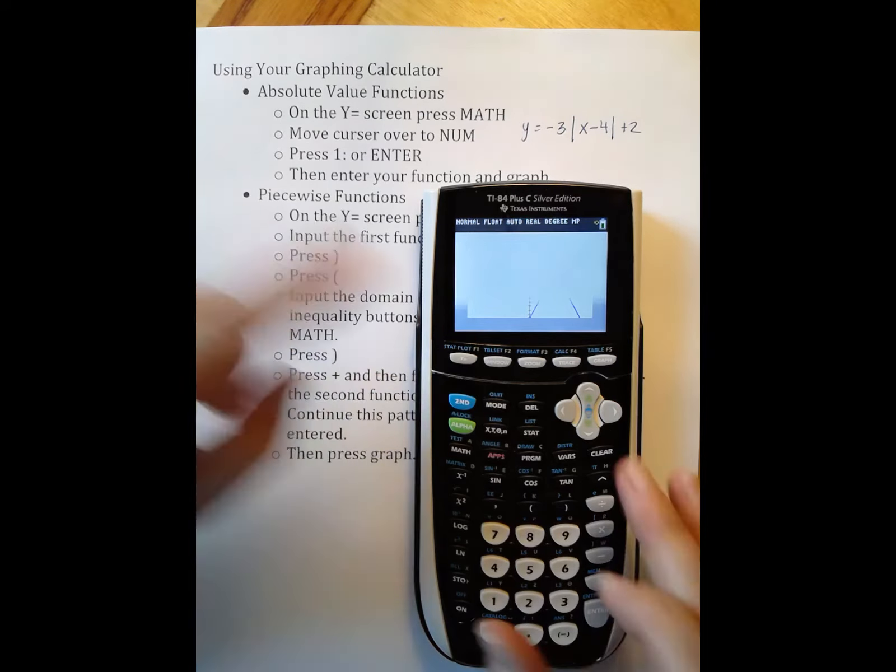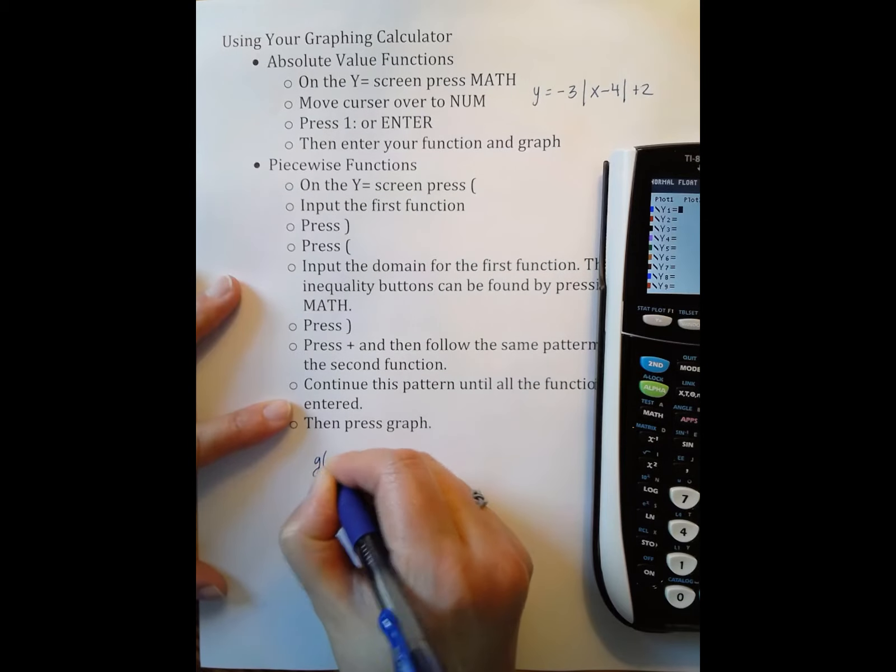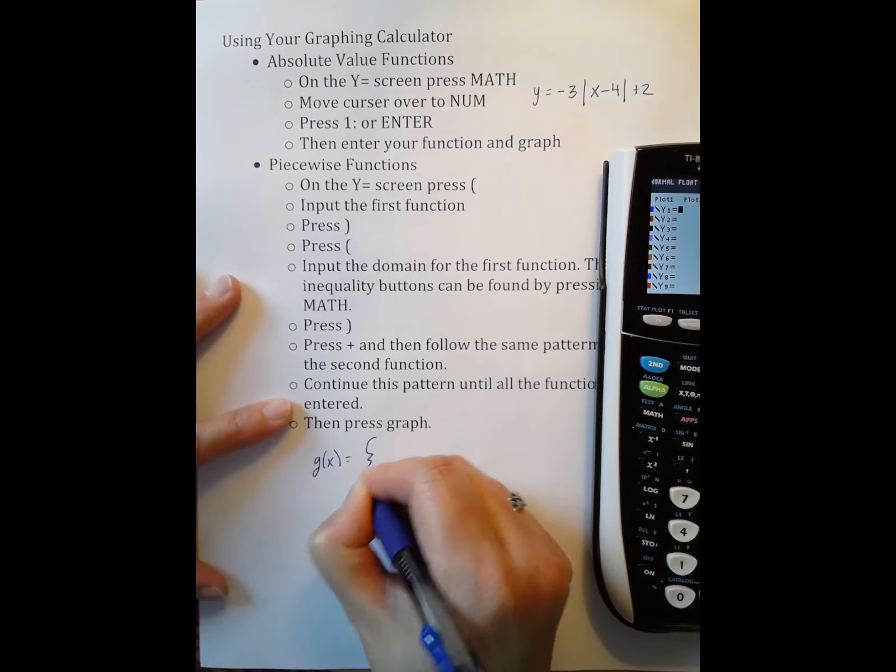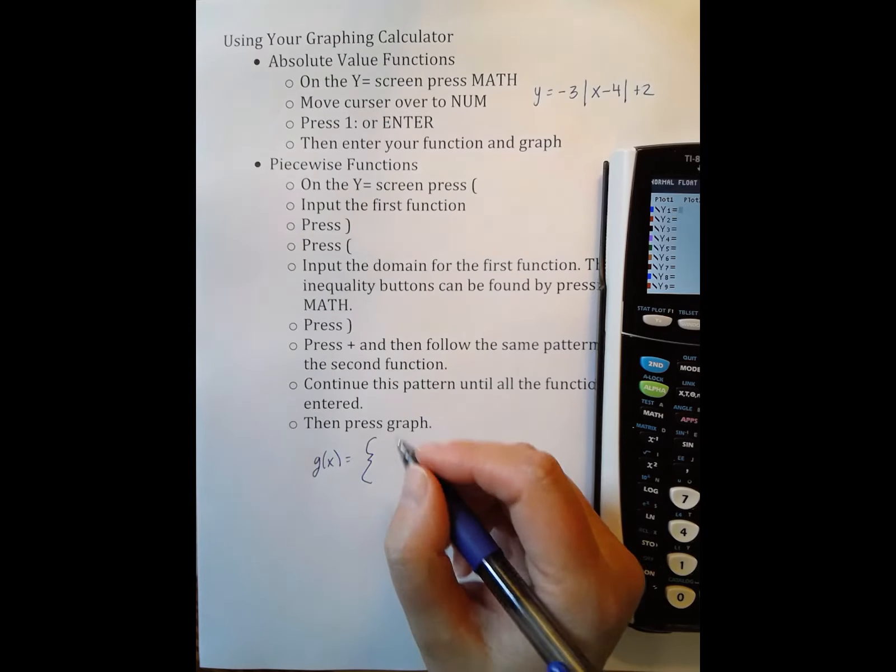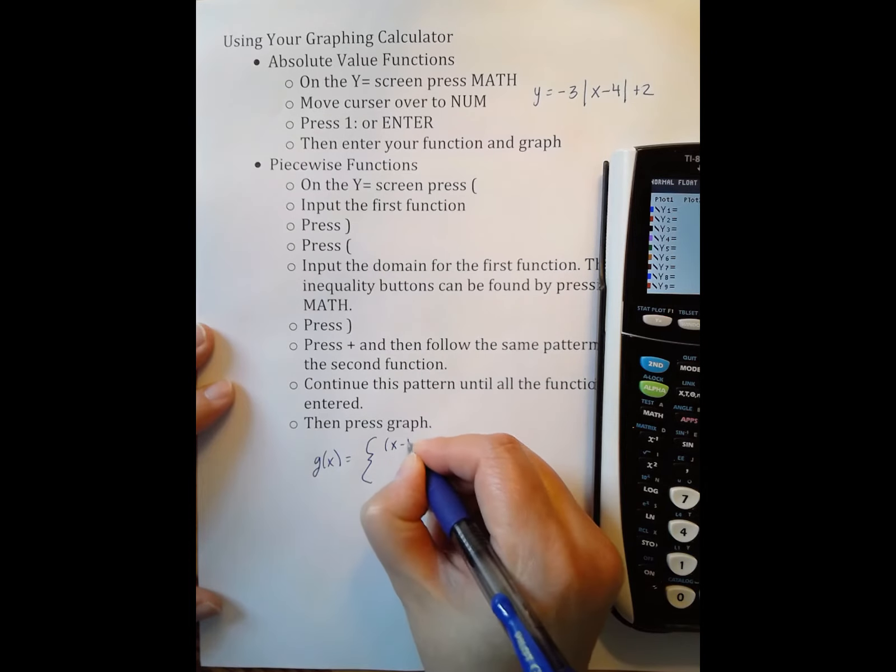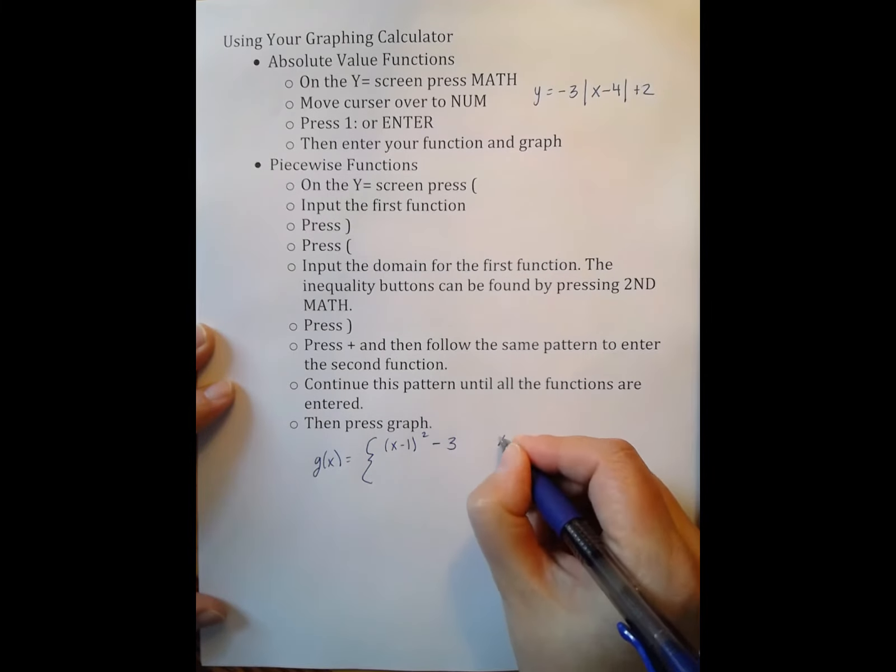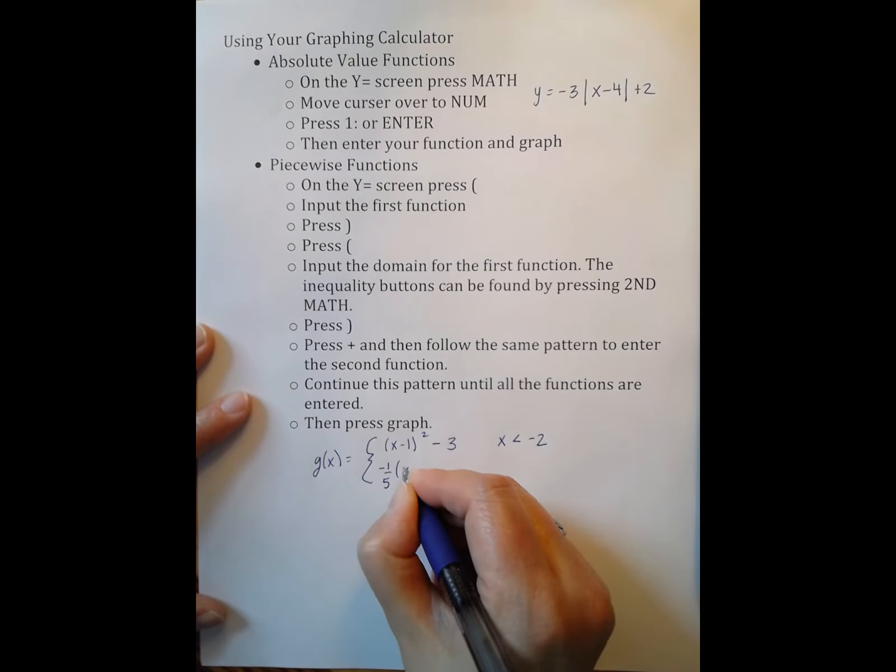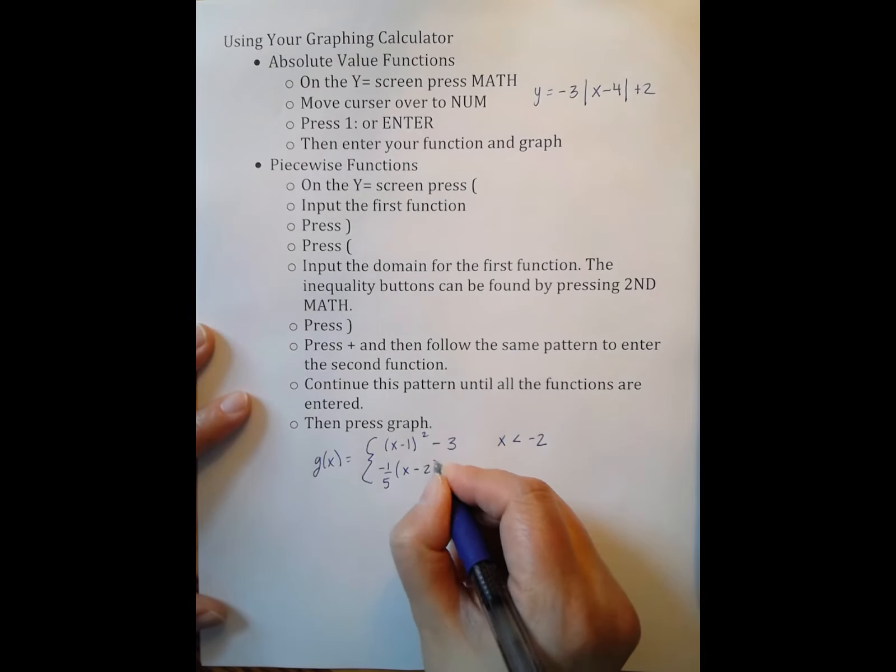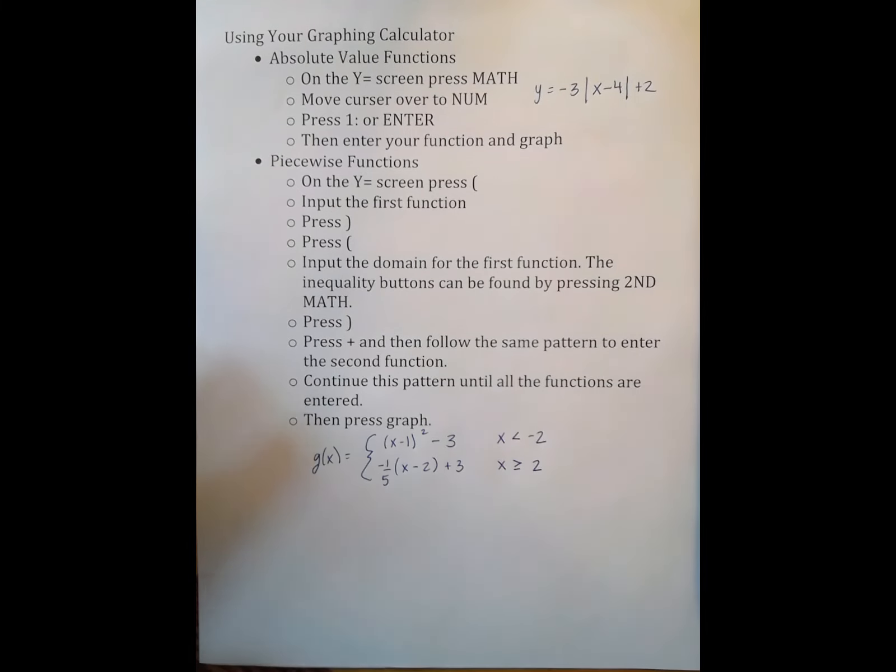Let's now look at a piecewise function. I'm going to clear away this function. The piecewise function I'm going to look at is x minus 1 squared minus 3, and we're going to do that for when x is less than negative 2. And then negative 1 fifth x minus 2 plus 3 for when x is greater than or equal to negative 2.